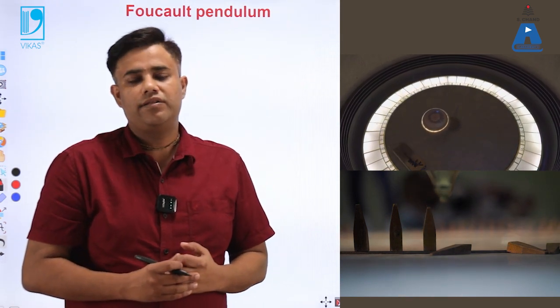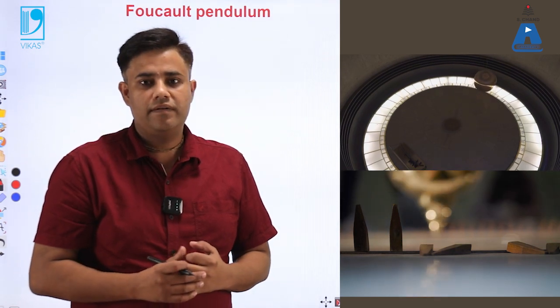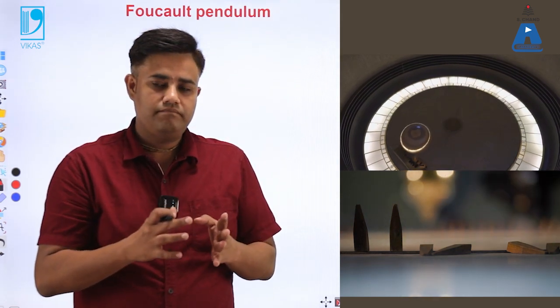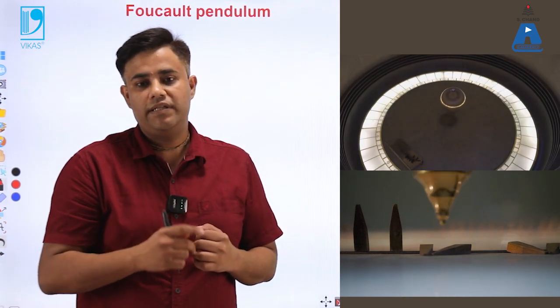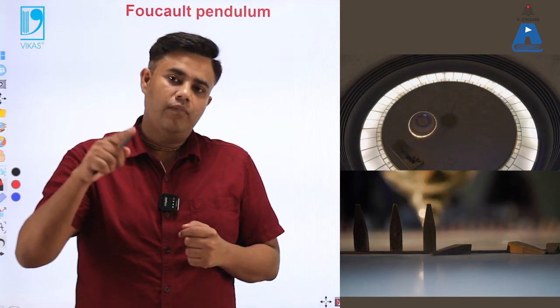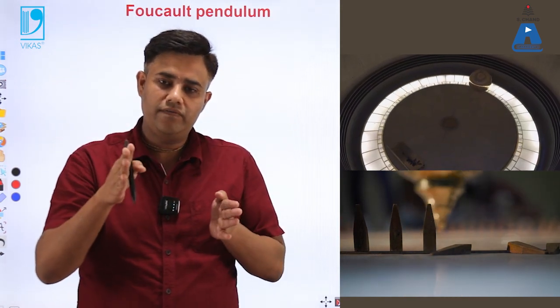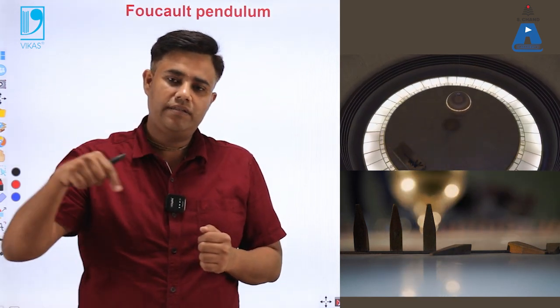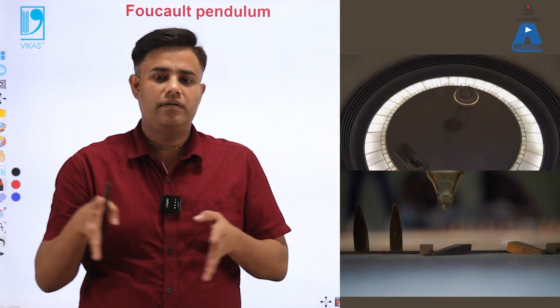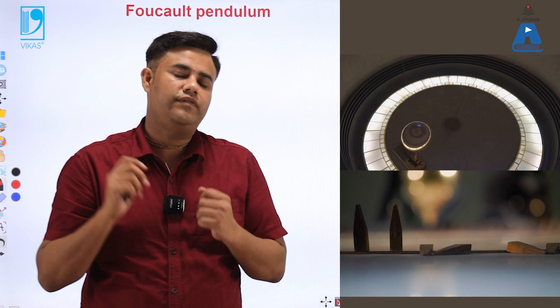In the demonstration video you can see a heavy bob attached to the string, and when nails are placed on the surface you can see them falling down — meaning the pendulum is changing its path. The bob moves in a particular direction, then shifts to another direction, knocking the nails down as it strikes them.